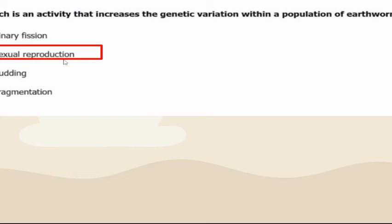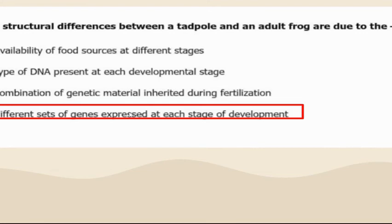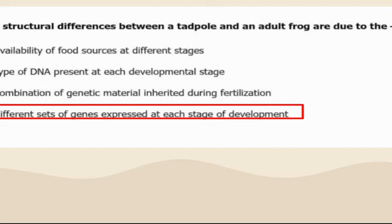The activity that increases genetic variation is sexual reproduction — sexual reproduction increases genetic variation. Structural differences between tadpoles and adult frogs are due to different sets of genes being expressed at different stages. It's not availability of food. The type of DNA present is the same throughout — it's just different sets of genes that are expressed.